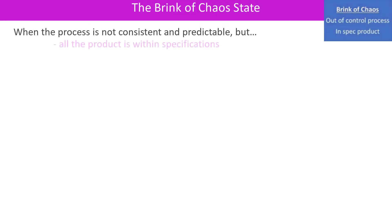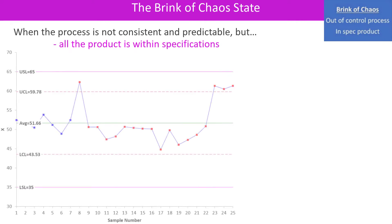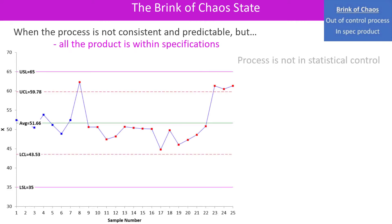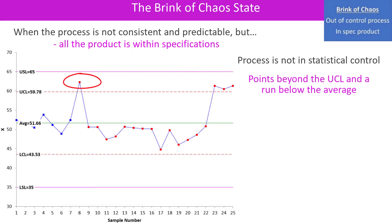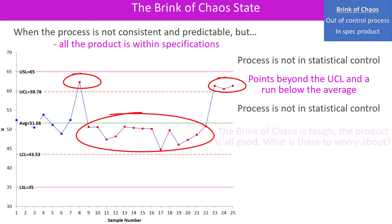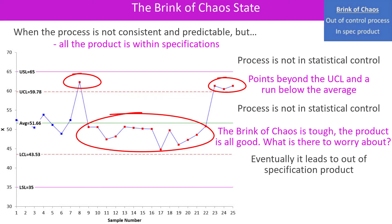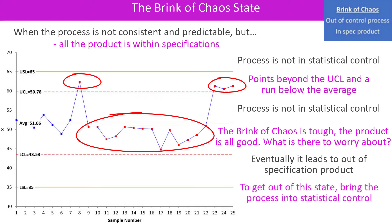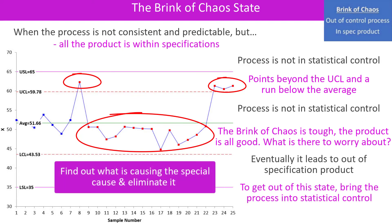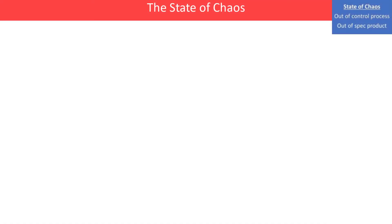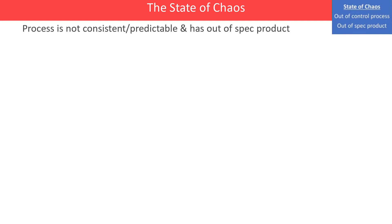Now we're going to meet the brink of chaos state. Here the process is not in control, although all the product is within specifications. You can see it's not in control because we have a couple of points above the control limits and a run below the average — so your process is not consistent and predictable. The problem with the brink of chaos is everything's within specification, so why worry? Well, eventually you're going to get out of this state and move to the state of chaos unless you get rid of those special causes.